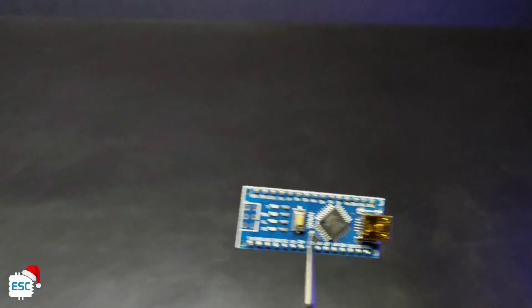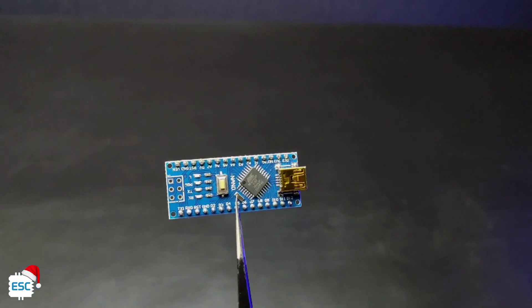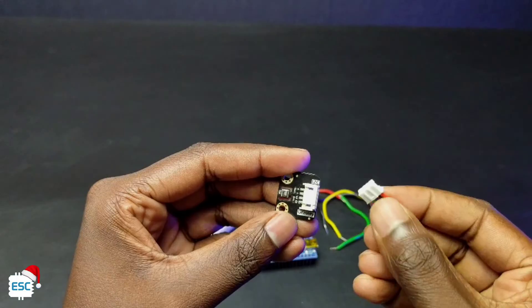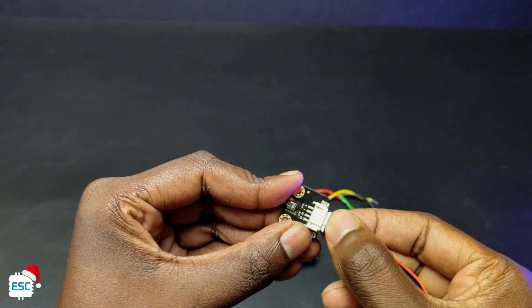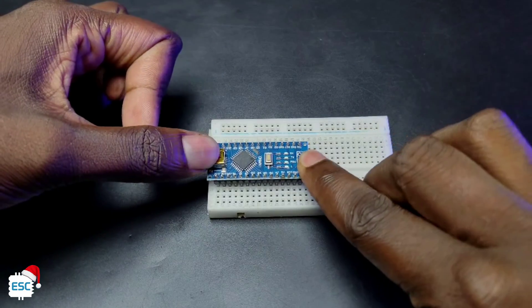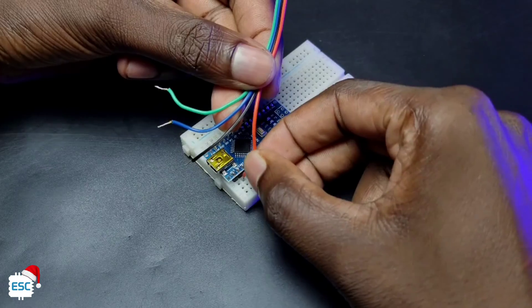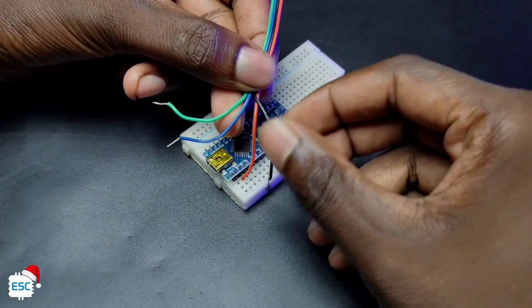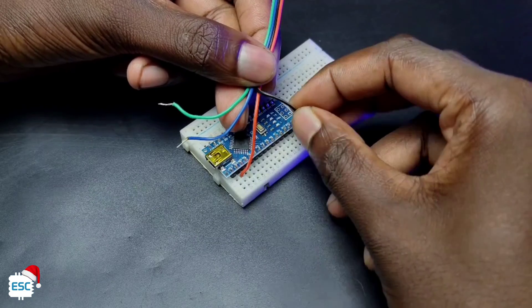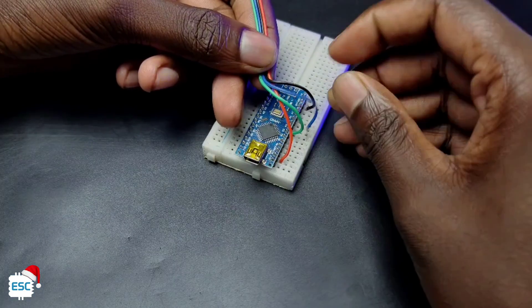Now let's connect this sensor to Arduino. You can use any Arduino. I am using Arduino Nano. Now connect the positive pin to 3.3V pin of Arduino, GND to GND, SDA to A4, SCL to A5.